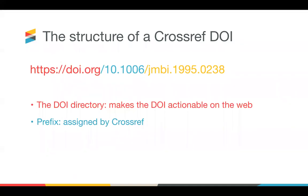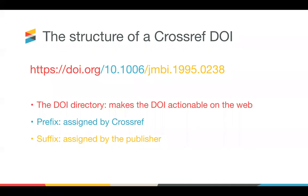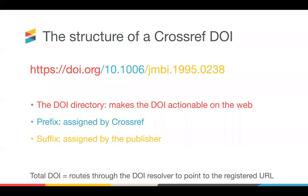Some members have one publication, some have multiple, and one prefix may be used to register all of your content, even if you publish different types of content — books and journals, for example. Finally, the yellow is the suffix, and this is the part of the DOI assigned by the publisher, and it is unique to each content item. Each member has a unique publishing schedule — this could be weekly, monthly, or yearly — and DOIs can be registered at any time. The total DOI routes through the resolver to point to the registered URL.